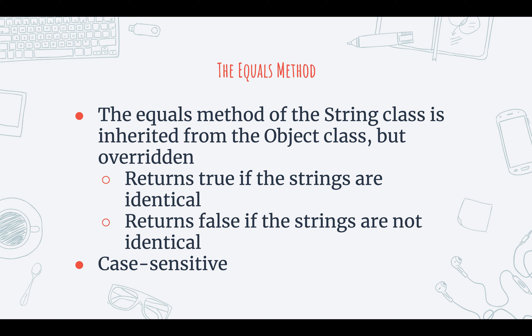Like I said in my objects video, every class gets an equals method through the object class, because the object class is the universal superclass of every single class that you develop. Since the string class is a class, it inherits methods from the object class. However, what the string class does is override it with its own equals method. The object class's equals method compares the memory location of each object — and if they were in different memory locations, it would return false, which is not really practical, especially for strings. Luckily, the string class provides an overridden equals method that compares the string values, not the memory location. It's also important to mention that it's case sensitive.